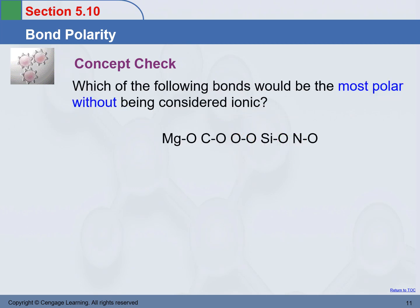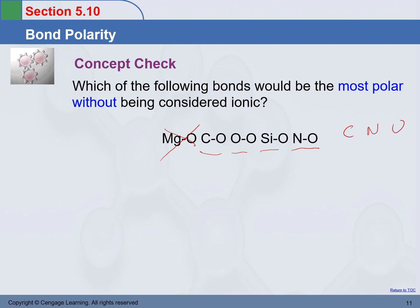Which of the following bonds would be the most polar without being considered ionic? Most polar should have the greatest electronegativity difference, but it cannot be ionic — that means it cannot be between a metal and a non-metal, so that option is out. All others are non-metals. For the greatest electronegativity difference among non-metals, oxygen and silicon will have the greatest electronegativity difference, so that would be the answer.